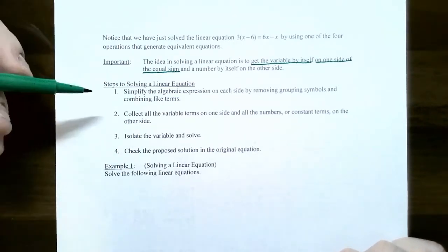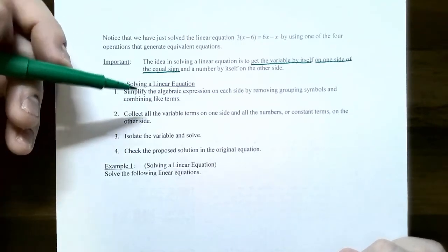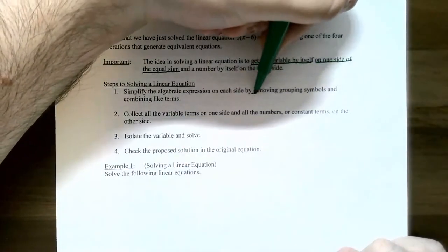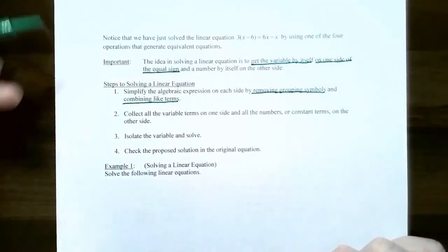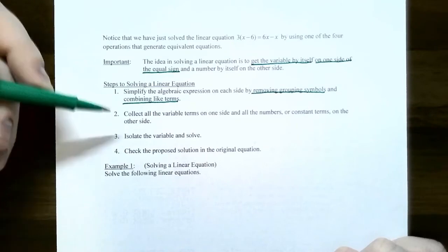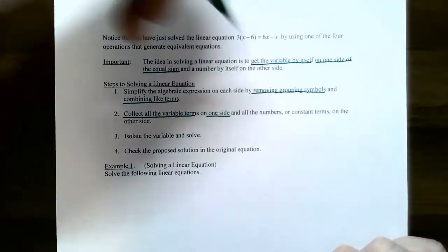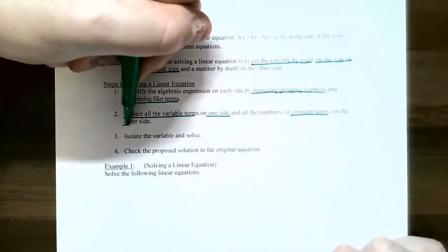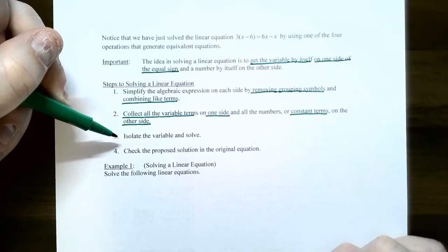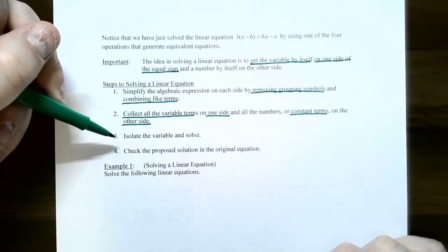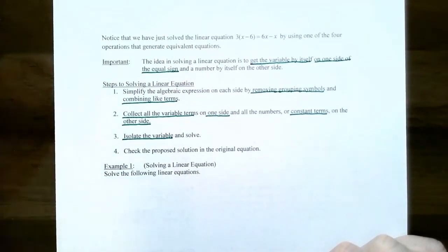Here are the four steps to solve a linear equation: Step one, simplify each side by removing grouping symbols using the distributive property and combining like terms. Step two, collect all variable terms on one side and all constant terms on the other side. Step three, isolate the variable by multiplying or dividing both sides. Step four, check your answer by substituting back into the original equation.